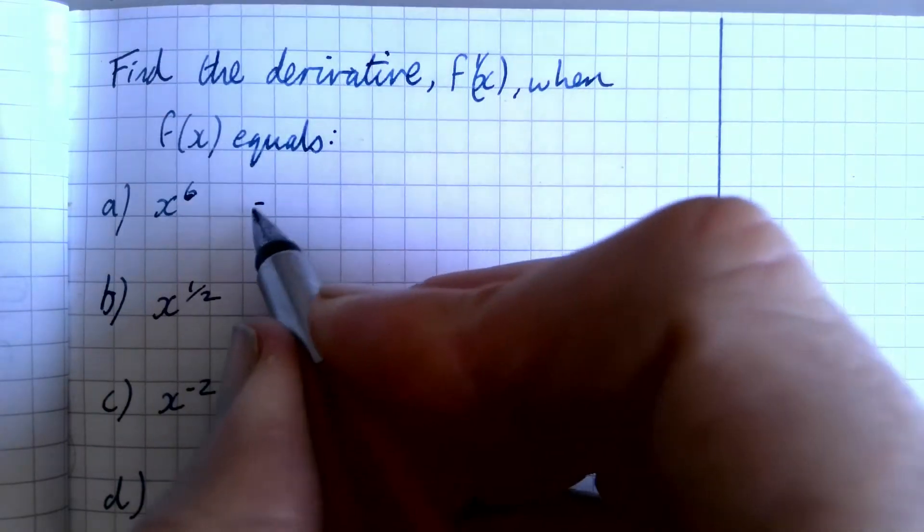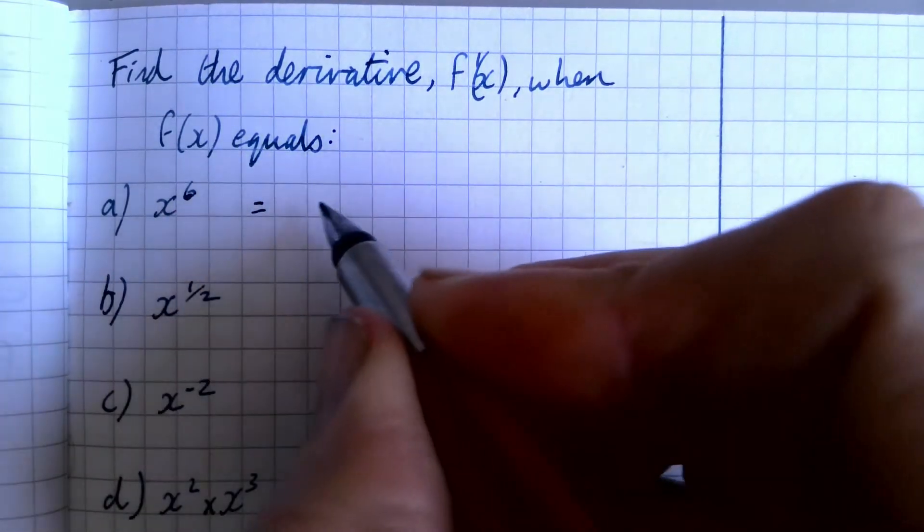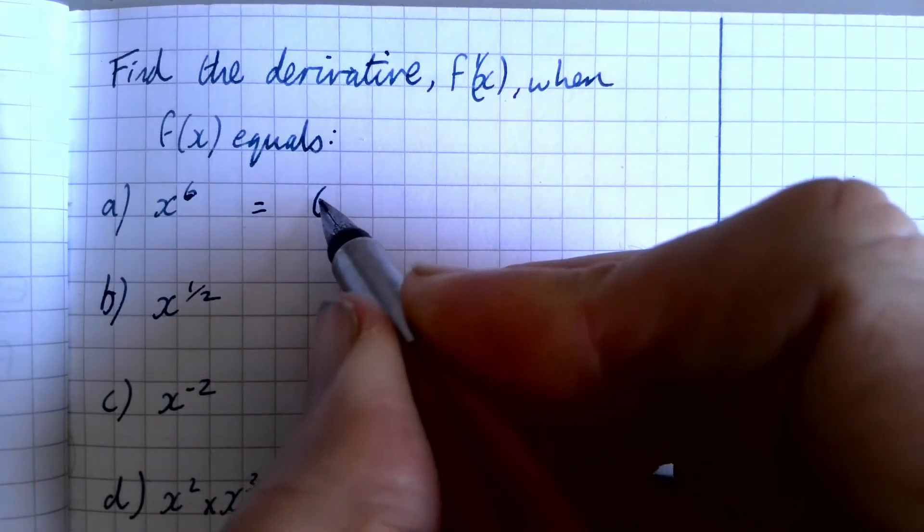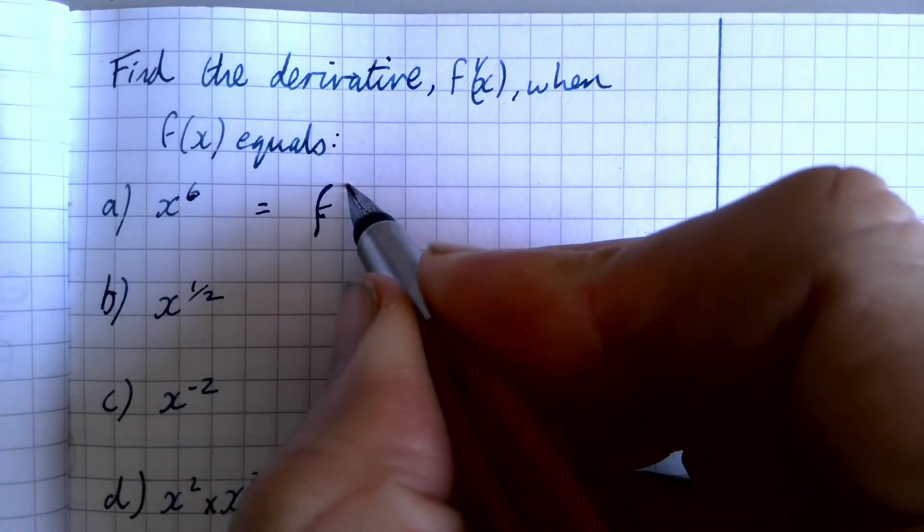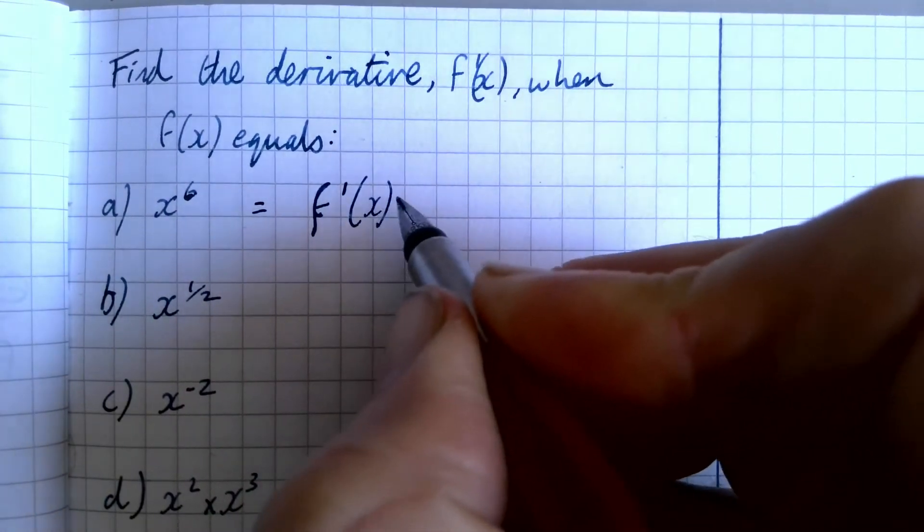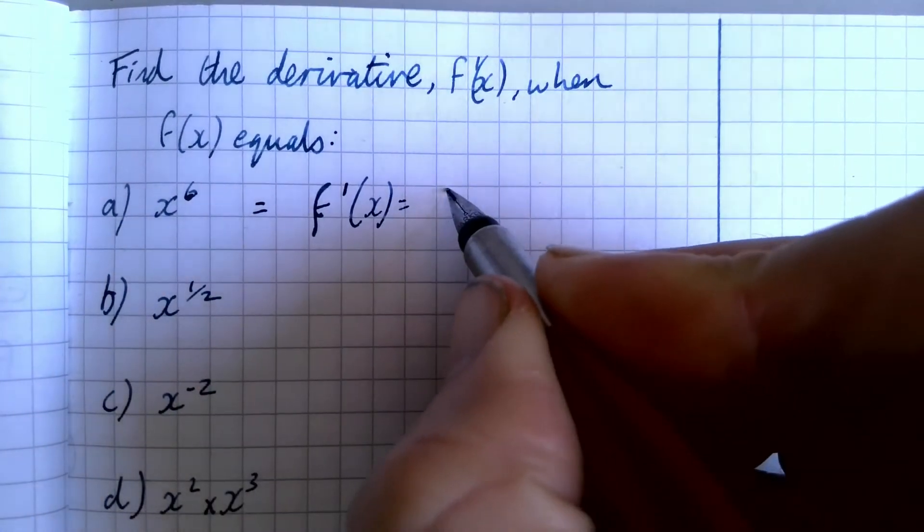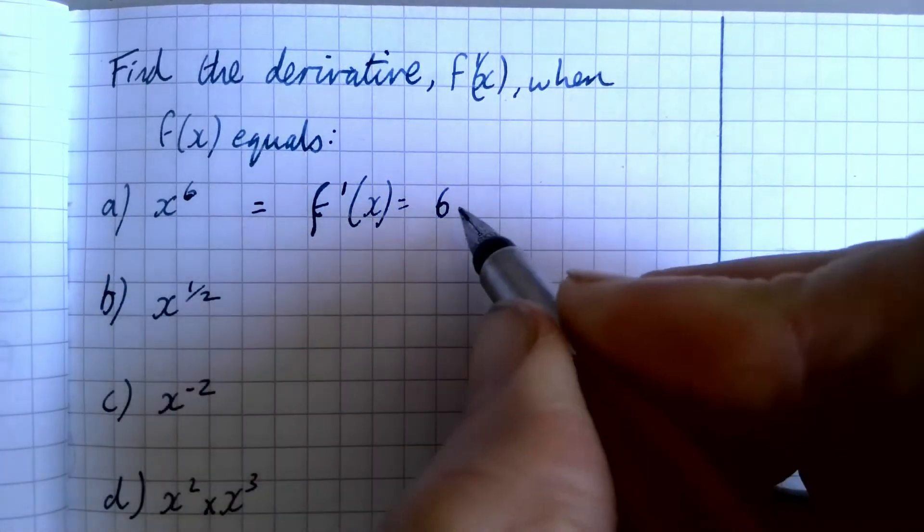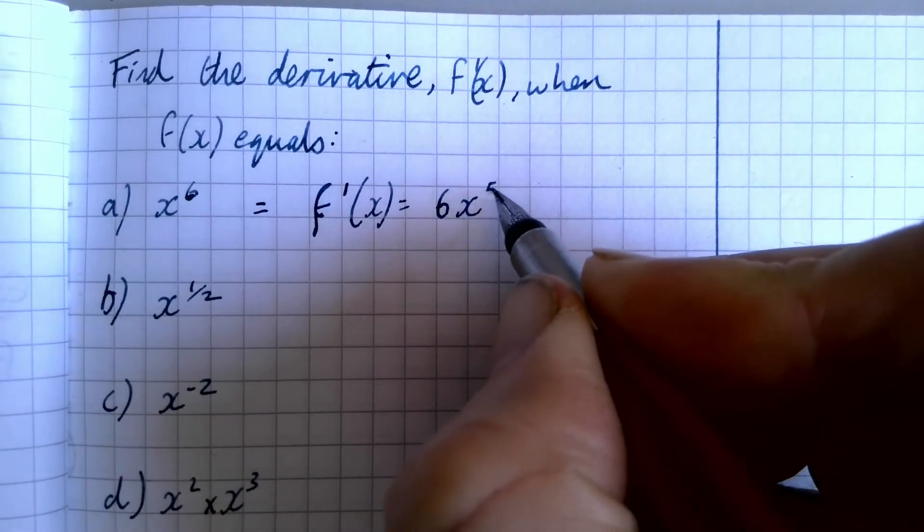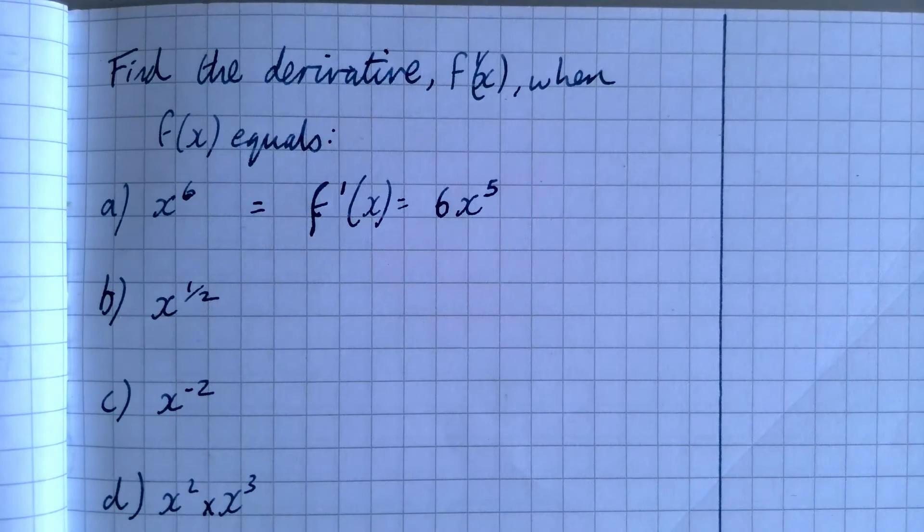So our rule is we multiply by the power. So I should write that f dash x is going to equal, we multiply by the power, we drop the power by one. That's all we have to do on that one.